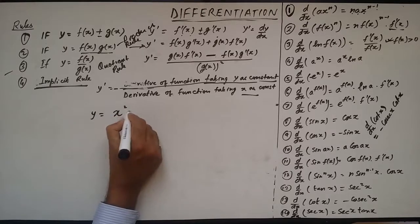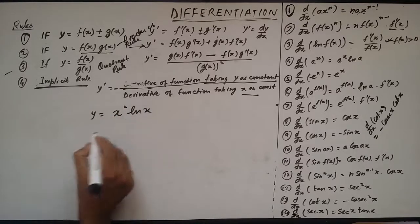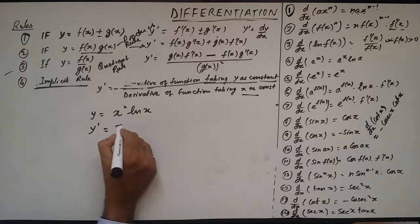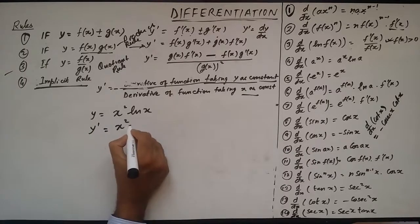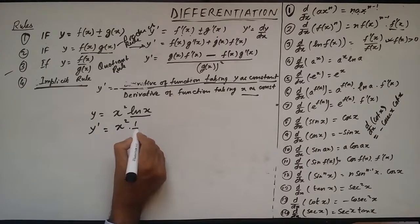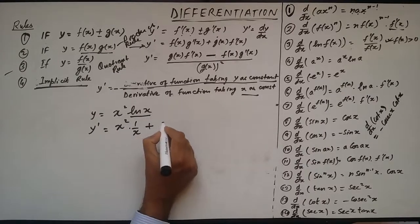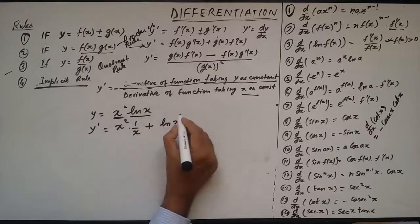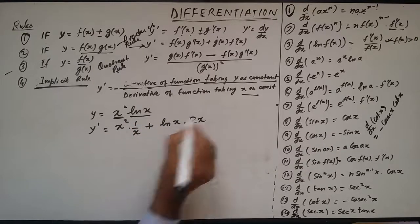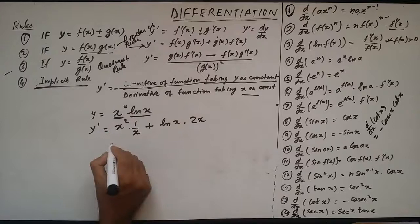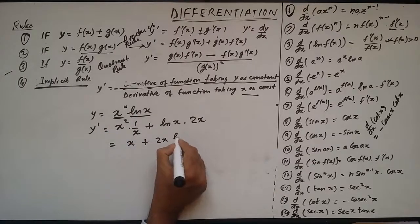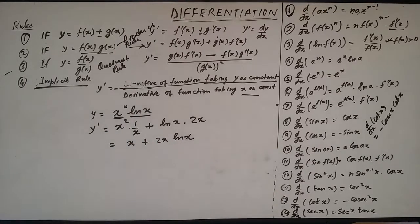Now I will not write the intermediate step. Going straight: the first function (x²) into the derivative of the second function (ln x) which is 1/x, plus the second function (ln x) into the derivative of the first function (x²) which is 2x. This gives x + 2x·ln(x).